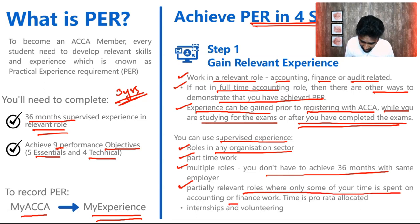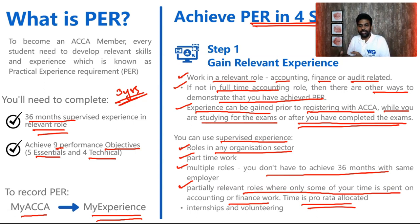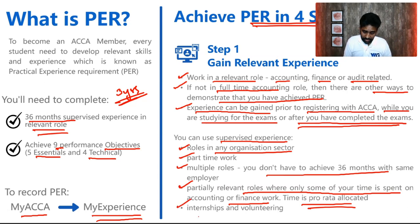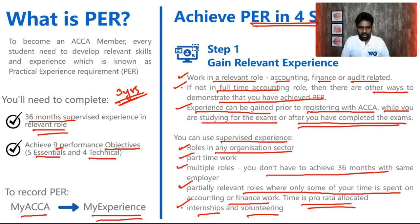For partially relevant roles where only some of your time is spent on accounting and finance work, time is pro-rata allocated. As a tutor, you are not doing full accounting work, so you only get one year because that's pro-rata allocation. But if you are working for an institution as a tutor and also part-time handling their finance, you can combine both. You can even claim internship or volunteering experience. And there is a surprise for all viewers regarding internships — me and Anshul are starting something new, wait for it, and I will explain shortly.